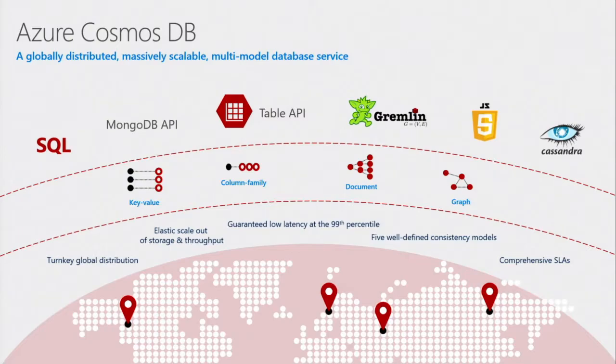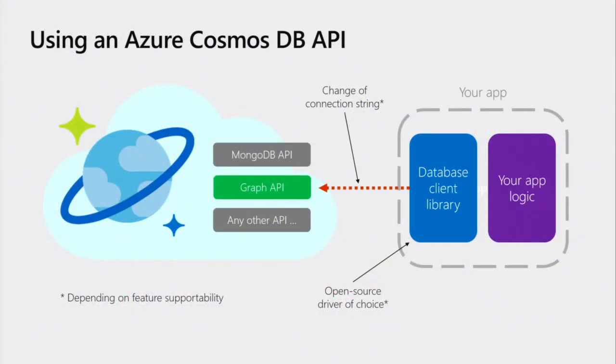How many people here are familiar with Cosmos DB already? The previous talk did give a lot of information about it, but I'll cover it anyway. Gremlin API, or the graph database API, is just one of the interfaces you can use to talk to Cosmos DB. The logic behind it is that you have your existing application built against either MongoDB, Cassandra, Gremlin, etc. You don't have to change your libraries or application platform — just change your connection string, migrate your data, and you can take advantage of all the benefits including global distribution and elastic scale-out.